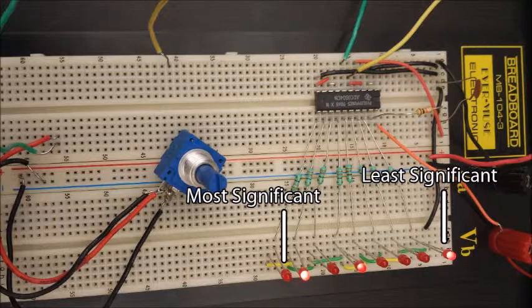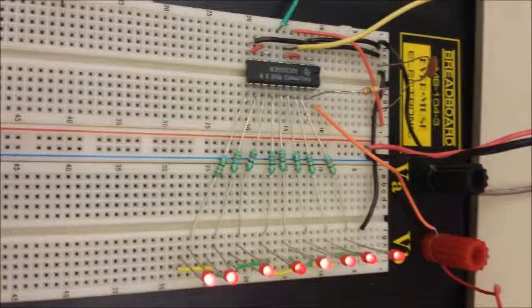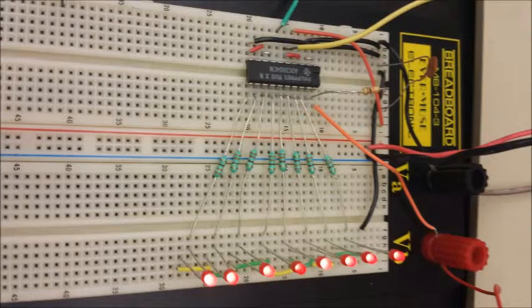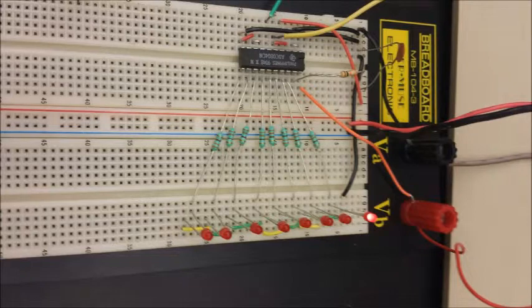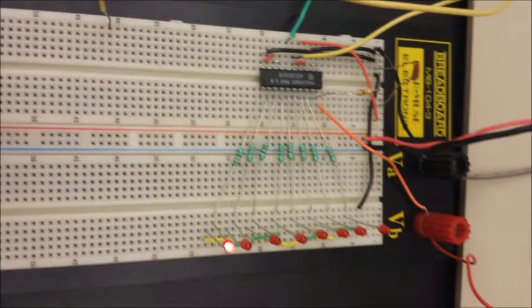An 8-bit binary array will be able to output any numerical value between zero and 255, with each individual bit representing twice the value of the one before it. An array which shows all the LEDs lit is displaying a numerical value of 255. An array with only the least significant LED lit is displaying a value of 1, while one with only the most significant LED lit is displaying a value of 128.